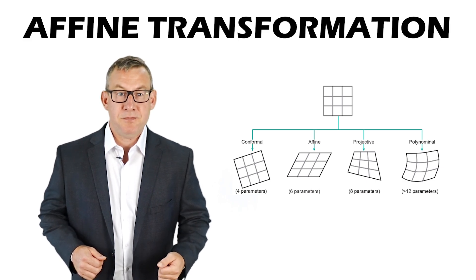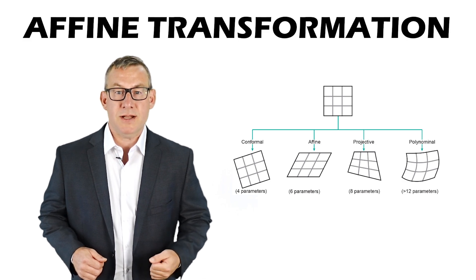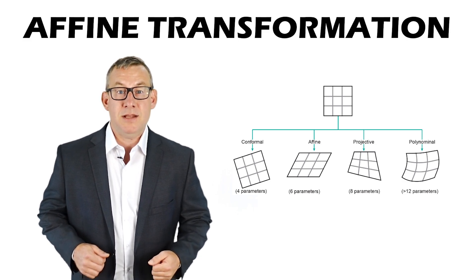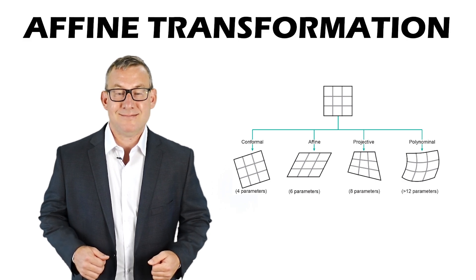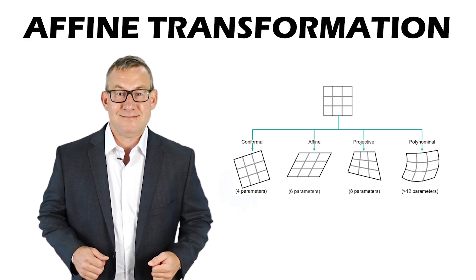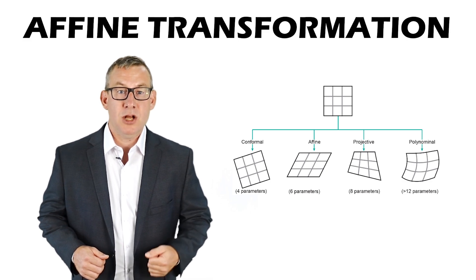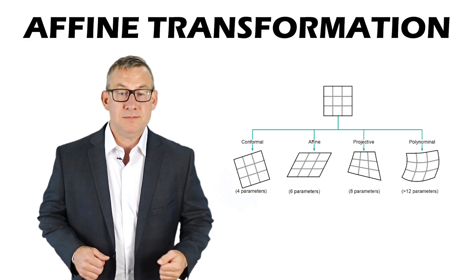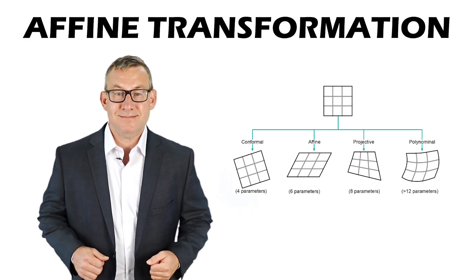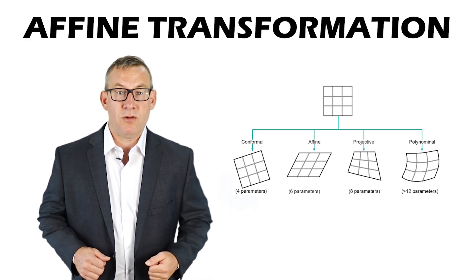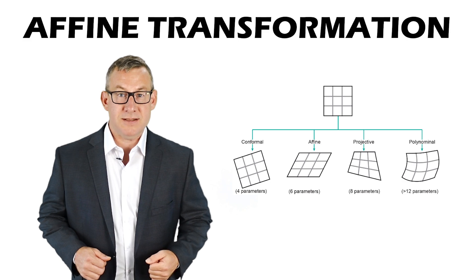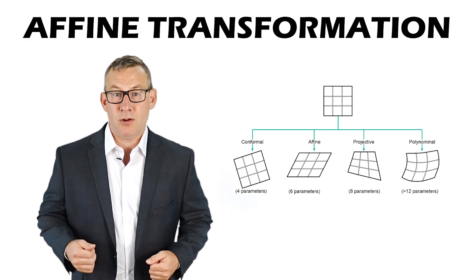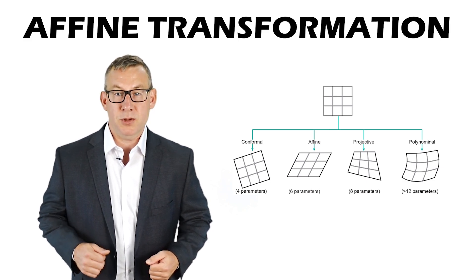Affine transformations are first-order polynomial transformations and are the most commonly applied coordinate transformation. Affine transformations can translate, rotate, scale, and skew the data. Since they are first-order polynomial transformations, they introduce less error than higher-order polynomial functions.